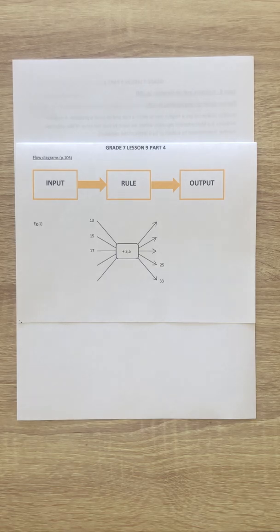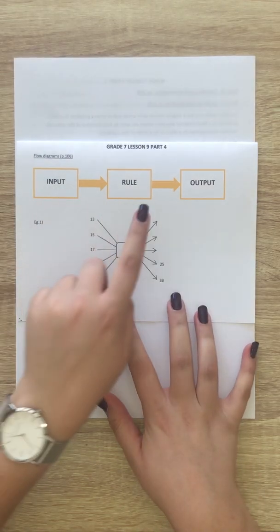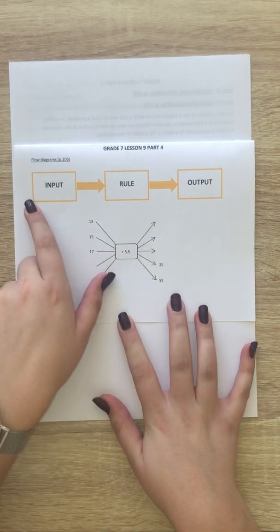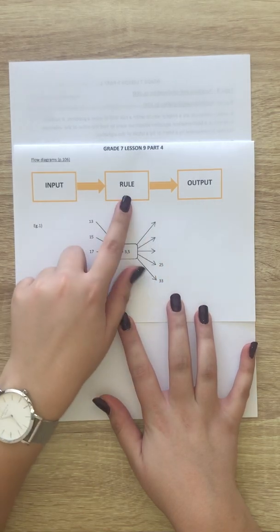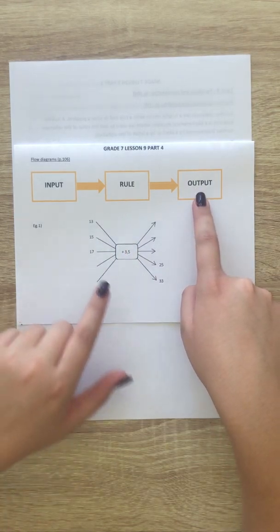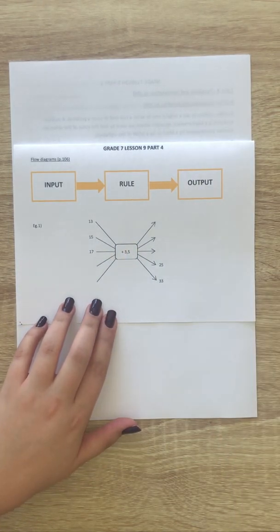Flow diagrams are made up of three parts. We've got our input, our rule, and our output. Input is basically the number you are using. You then apply the rule to get your answer, which is the output. So let's look at this first flow diagram.